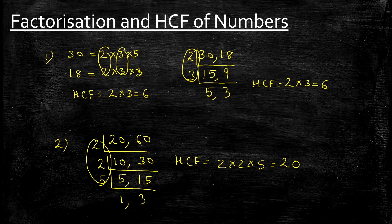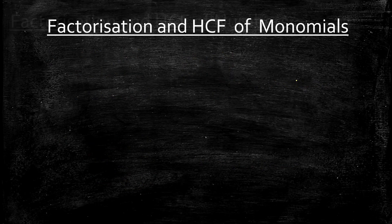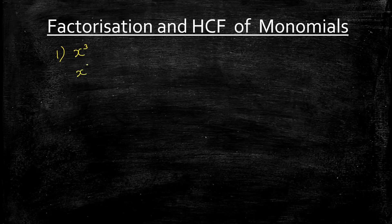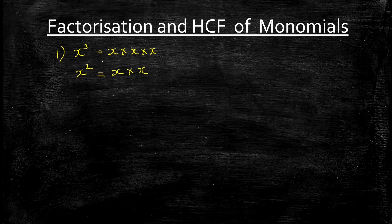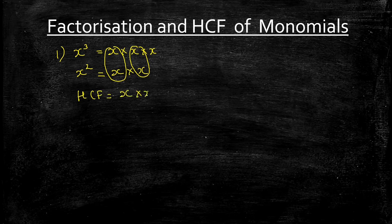Now let's apply the same technique to finding the HCF of monomials. Take x³ and x²: the factors of x³ are x × x × x, and x² is x × x. We see that two x's are common, so the HCF is x × x, which is x². In general, when we have the same variables, the lowest power will be the common factor.